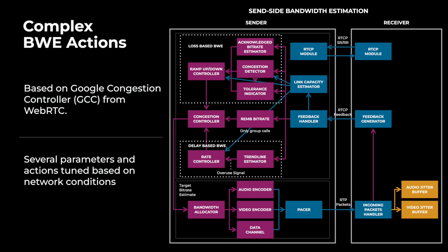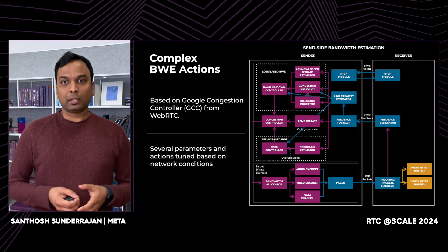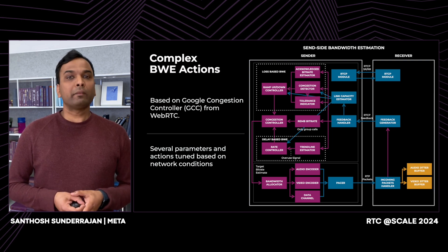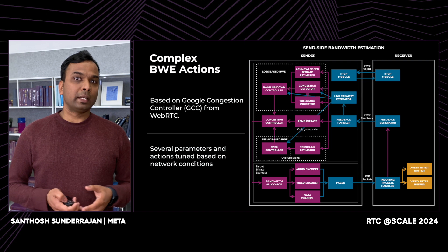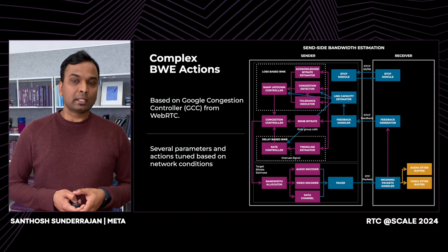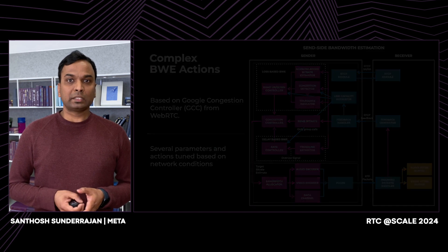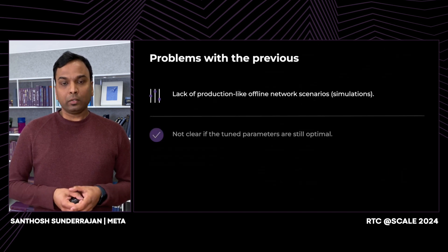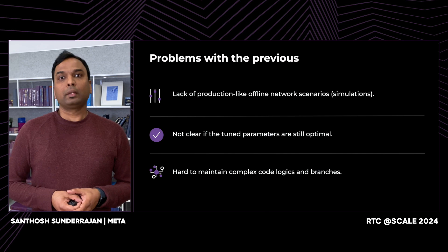You can see multiple sub-modules and how they use information received from the receiver. These sub-modules have lots of parameters within them, and these parameters are tuned based on the network conditions. For example, in high bandwidth conditions we want to ramp up really fast, whereas in low bandwidth conditions we want to ramp down really fast. What we found with the existing approach is that it took lots of tuning on production.